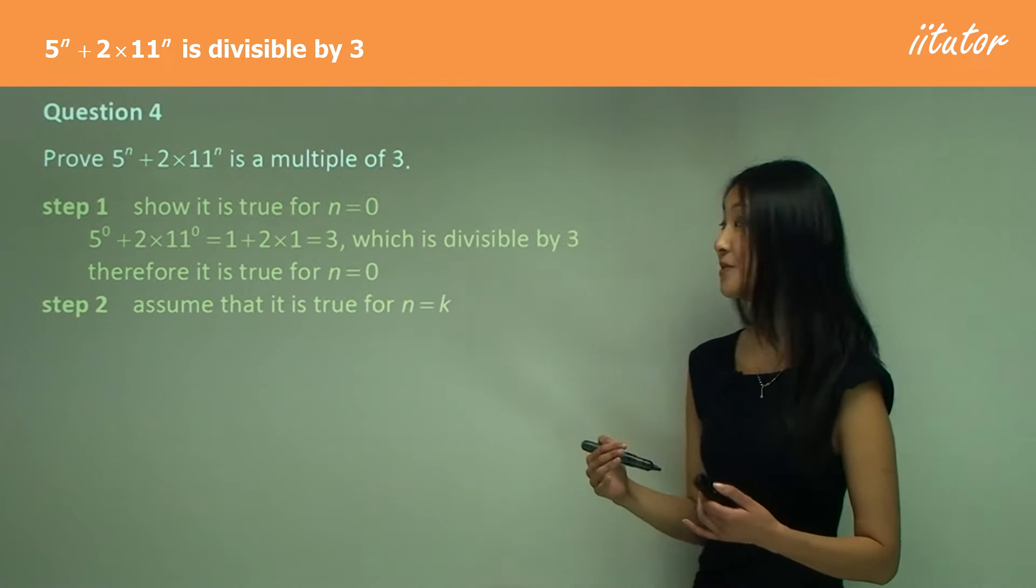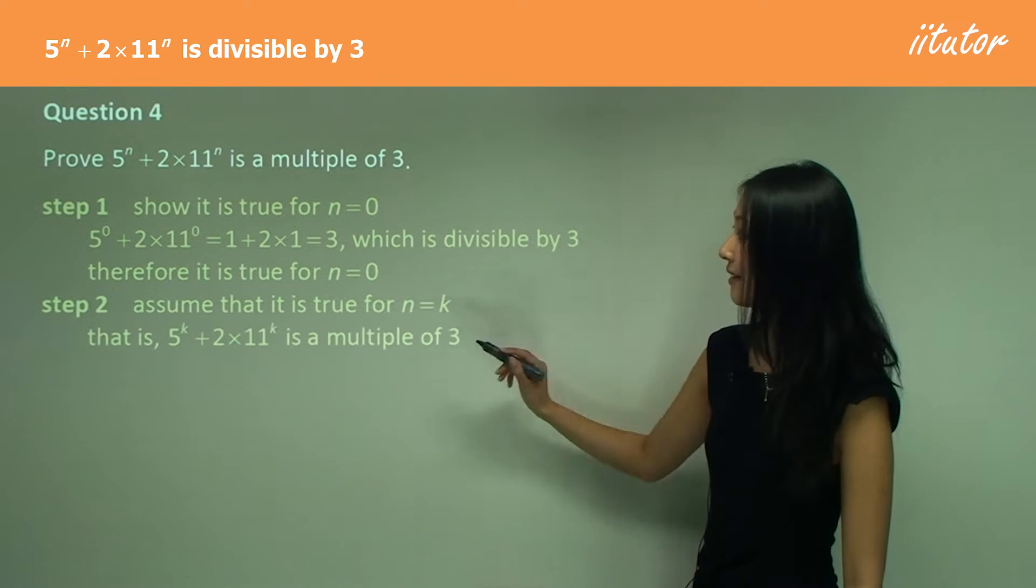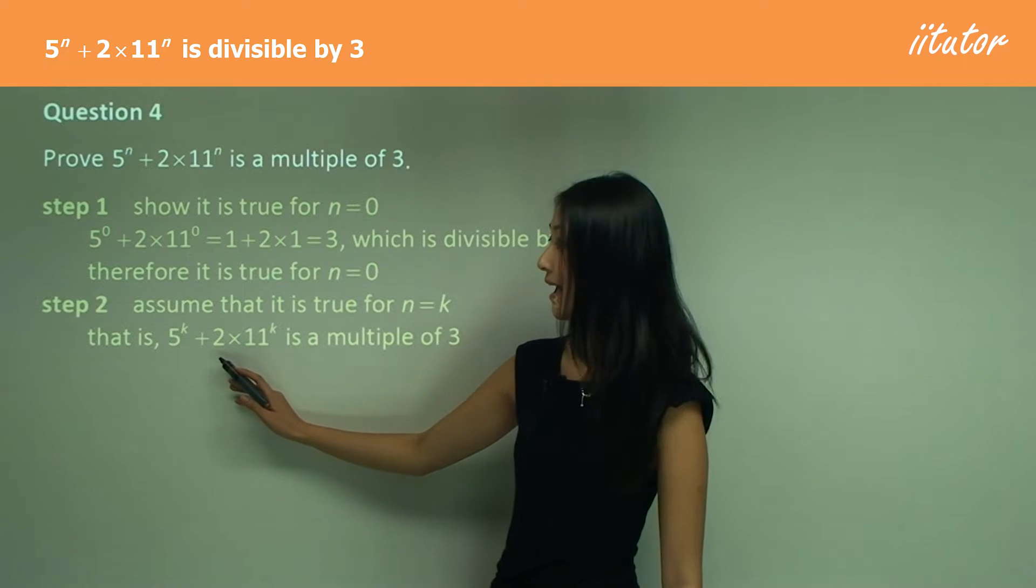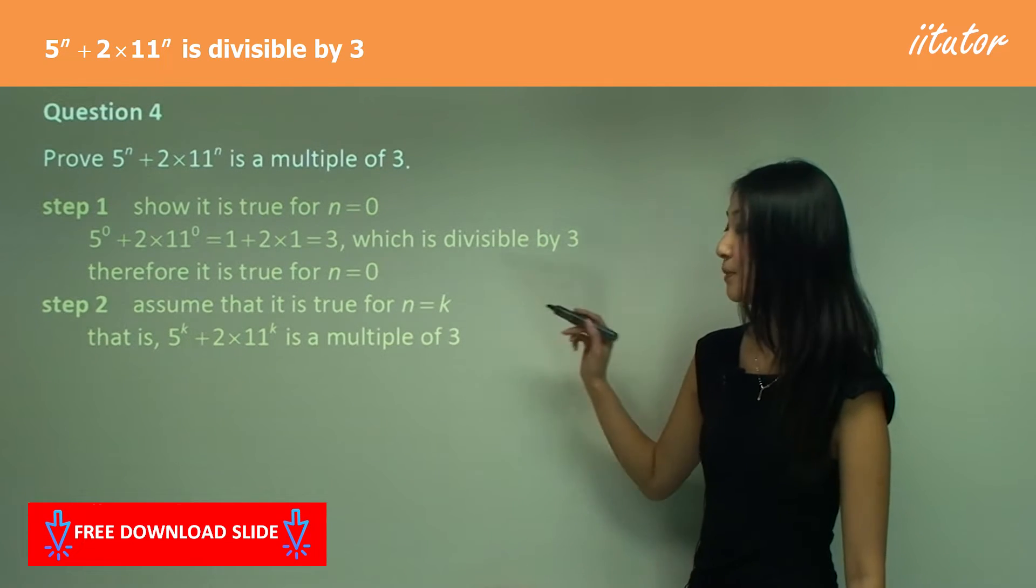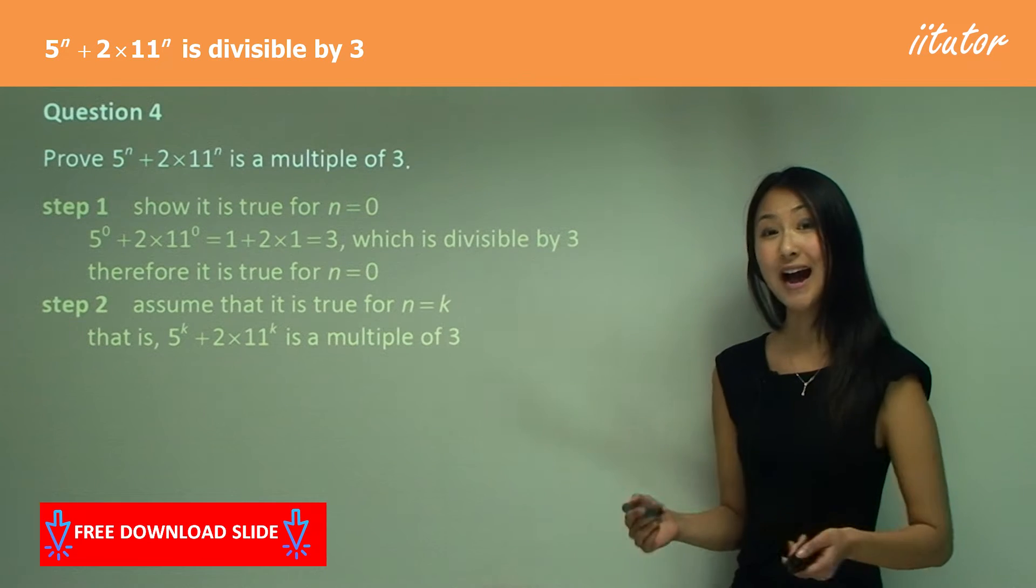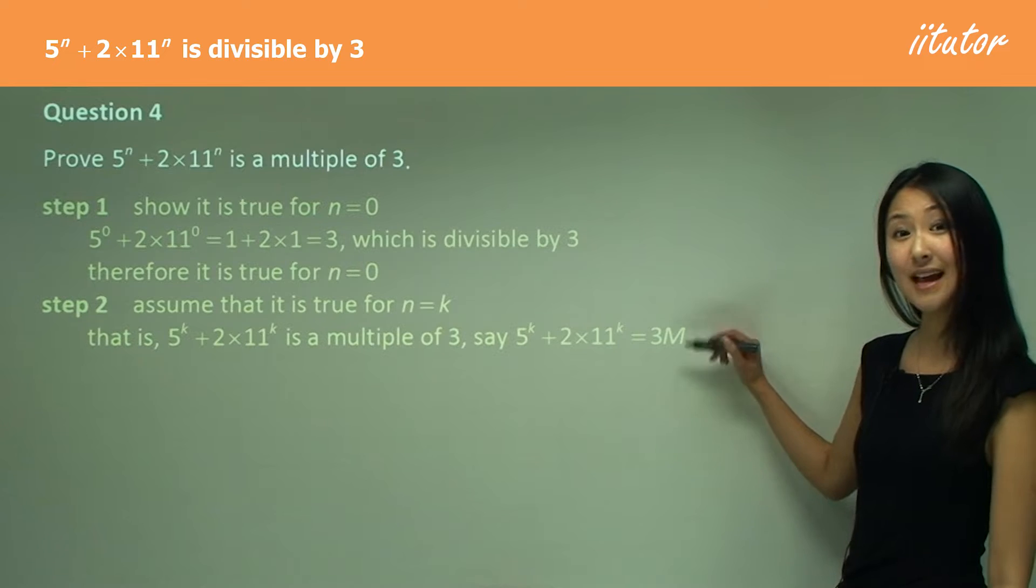So step two is our assumption, where we write assume it is true for n equals k. That is, when we have five to the power of k plus two times 11 to the power of k, it is a multiple of three, which means we can write as an equation, which is equals to 3m, where m is an integer.